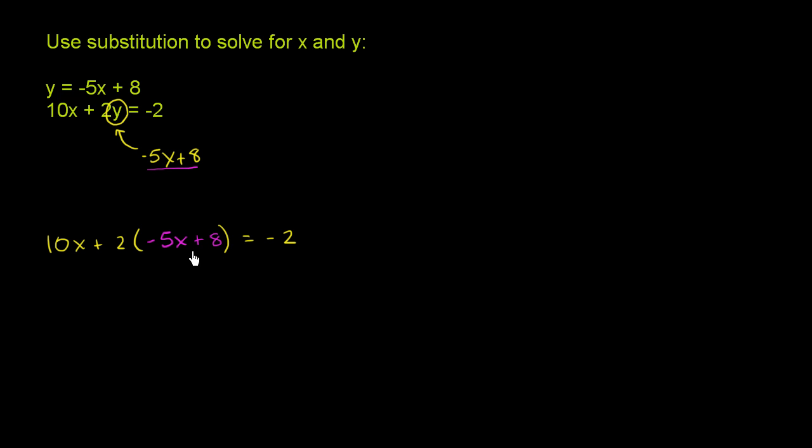Now we have one equation with one unknown. We can just solve for x. We have 10x plus, so we can distribute this 2 onto both of these terms. So we have 2 times negative 5x is negative 10x. And then 2 times 8 is 16.